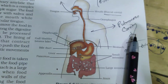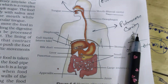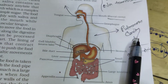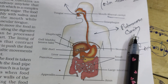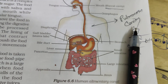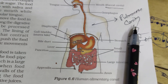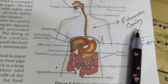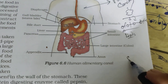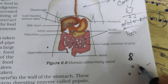Bile salts break down fat — matlab fat ko breakdown karne ke liye lipase chahiye, lekin lipase ke liye surface area increase karna padega. To surface area increase karne ke liye bile juice kaam karta hai. This is known as emulsification of fat. Fat jo aise pakka ke reheta hai usko breakdown karke alag-alag kar deta hai.